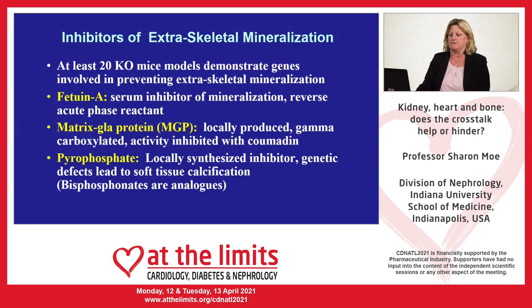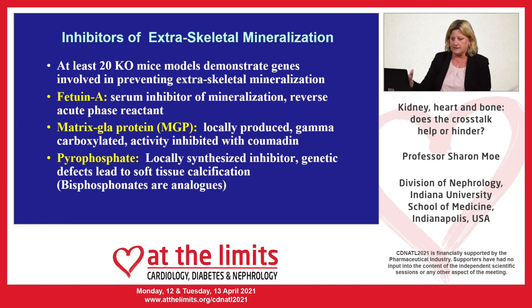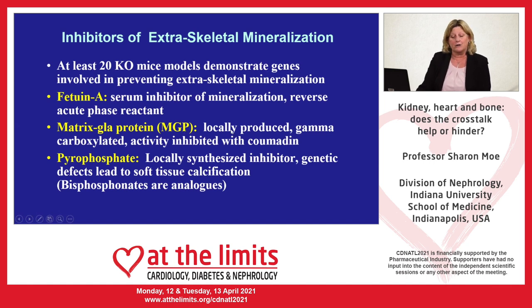For vascular calcification, there are at least 20 or more mouse models demonstrating that when you knock out a specific gene or transcription factor, you get vascular calcification in different vascular beds. Fetuin-A is a serum inhibitor of mineralization. Matrix Gla protein is probably the most important to prevent arterial calcification. There is also pyrophosphate, which is locally synthesized and can lead to soft tissue calcification — and bisphosphonate drugs are actually an analog of pyrophosphate.